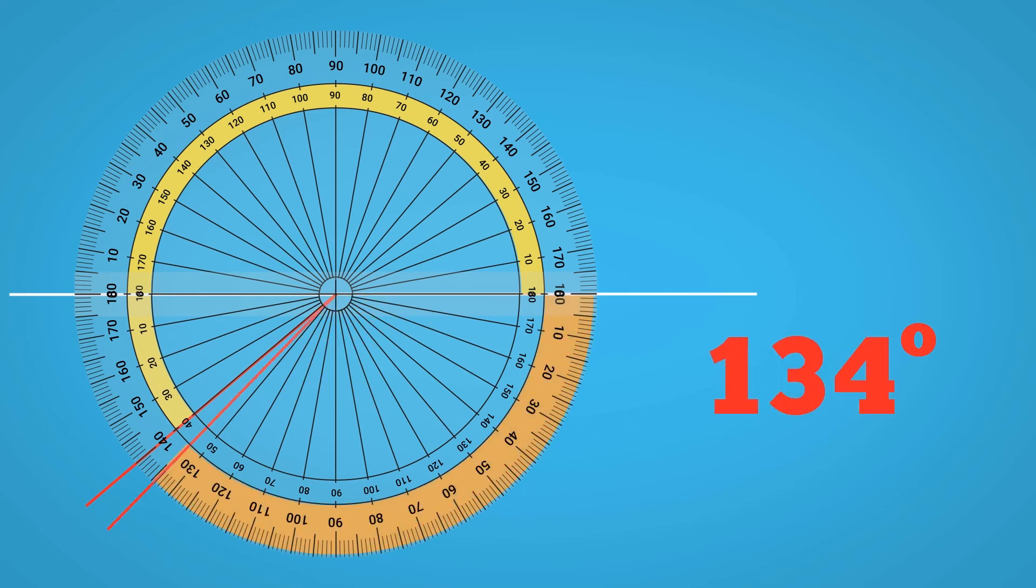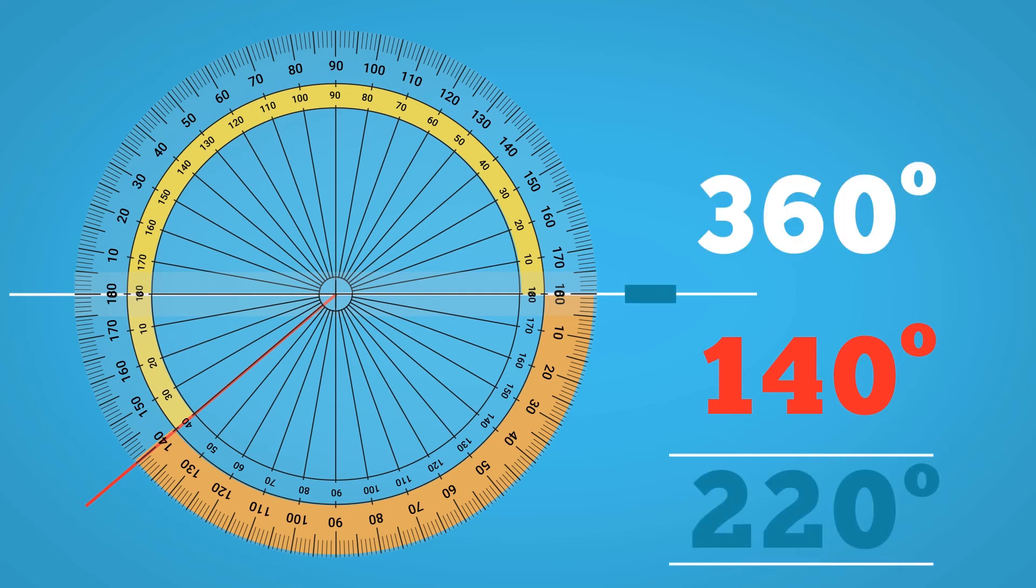A second option: you could measure the missing section instead, this time using the outer scale, and deduct that from 360 to find the part you want.